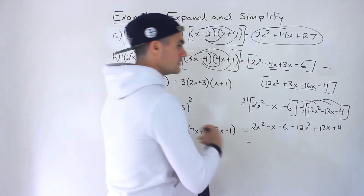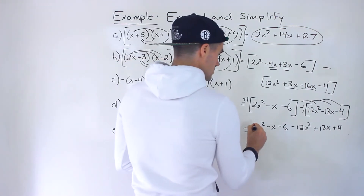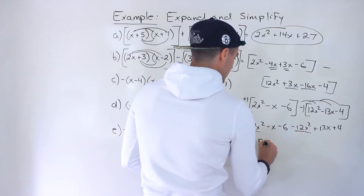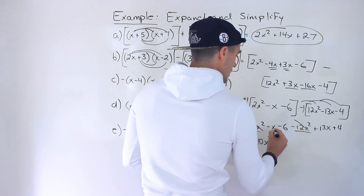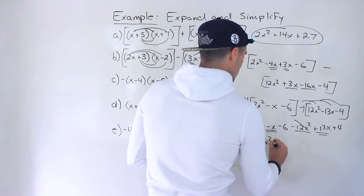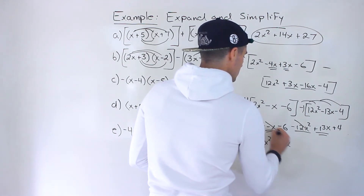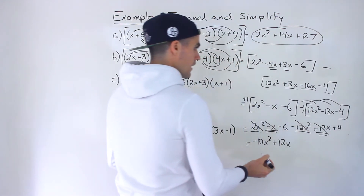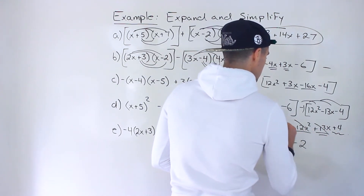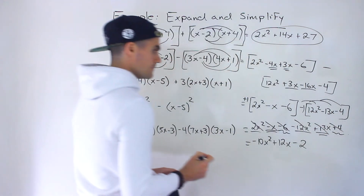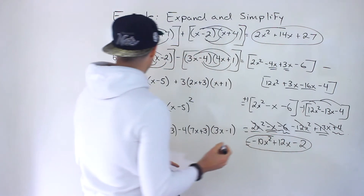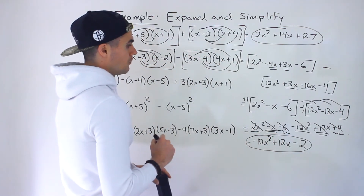Now just collect like terms. 2x squared minus 12x squared gives minus 10x squared. Then minus x plus 13x gives positive 12x. And then minus 6 plus 4 gives minus 2. So this ends up being the final answer for part B: negative 10x squared plus 12x minus 2.